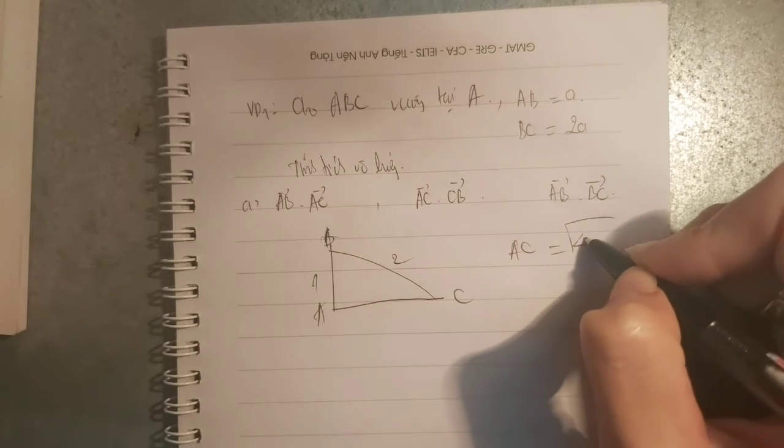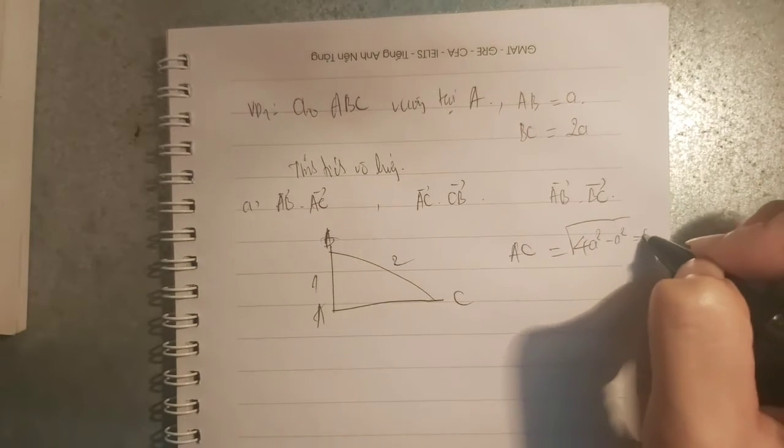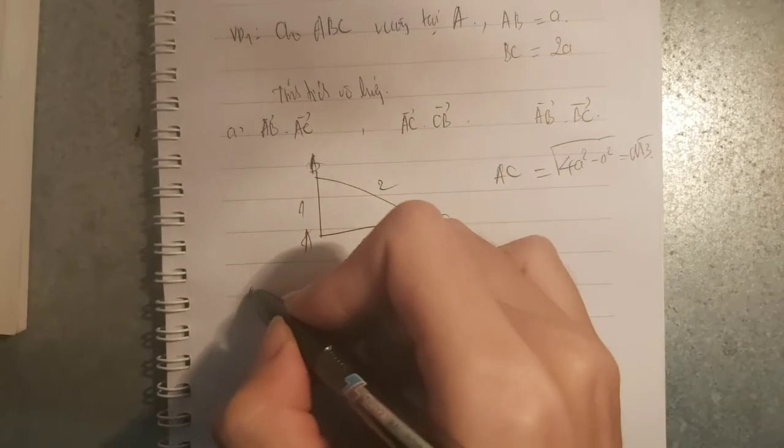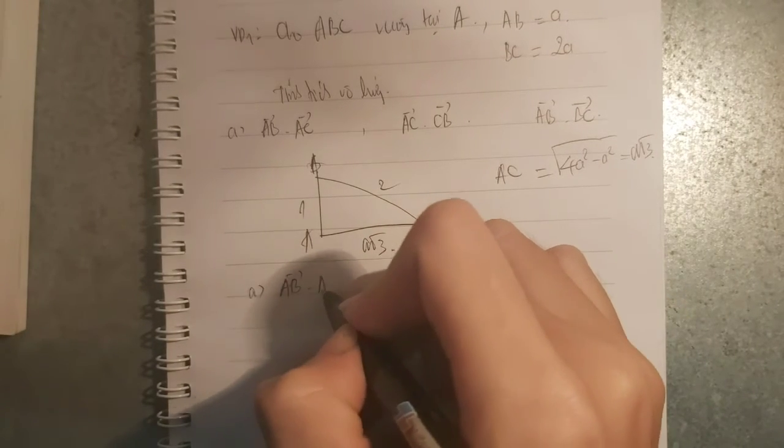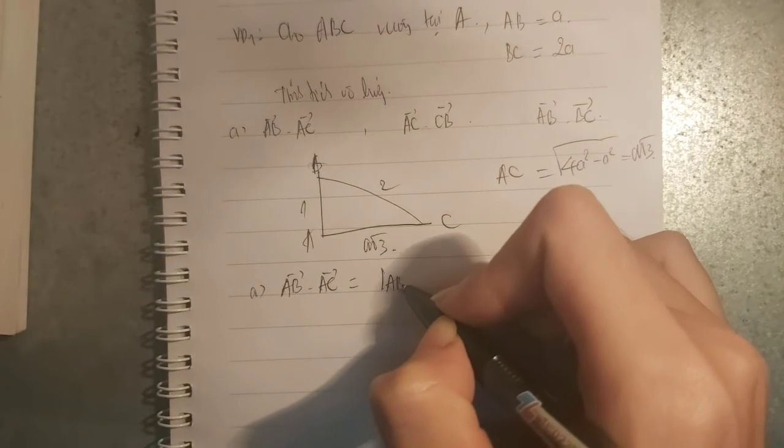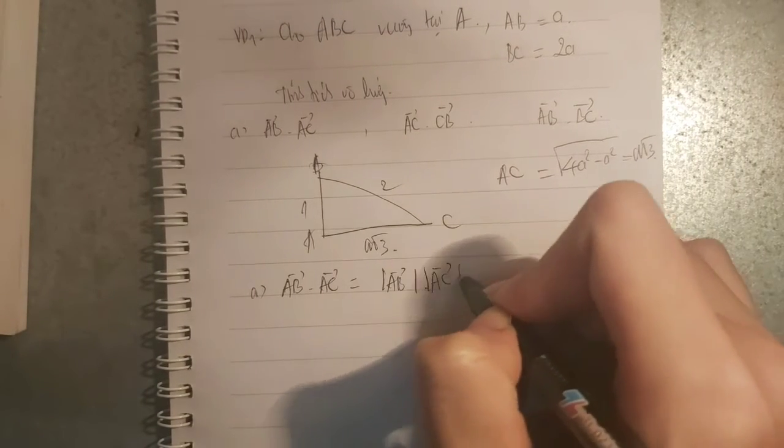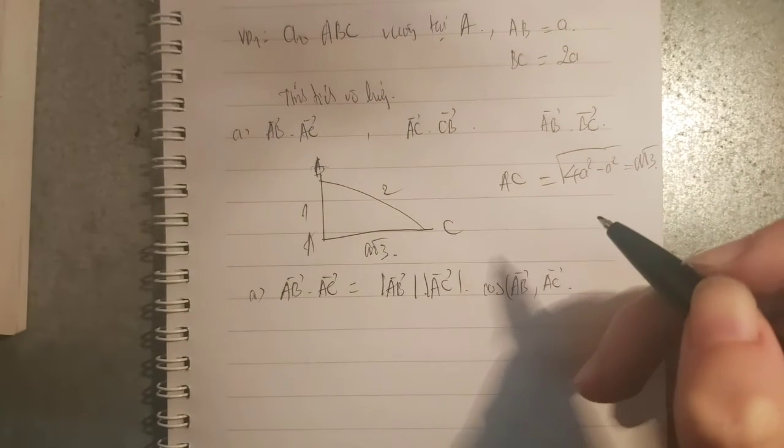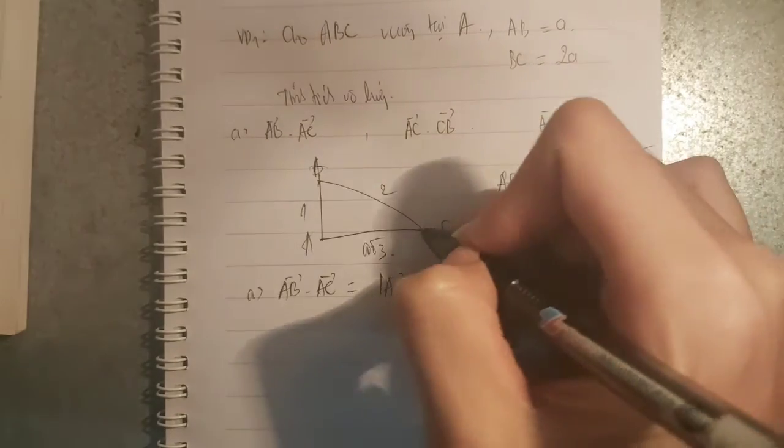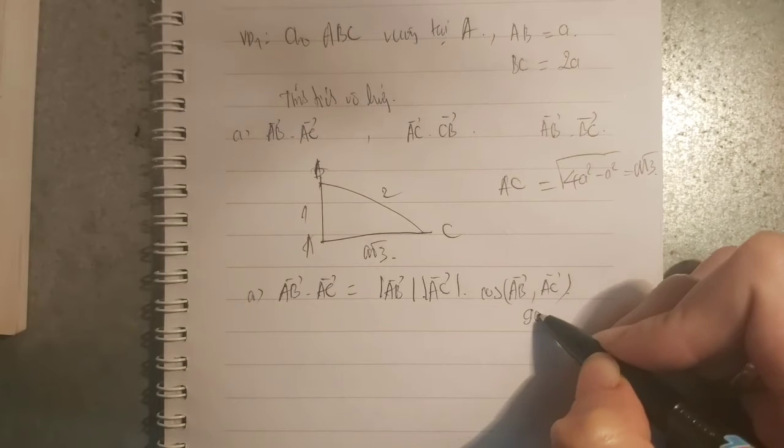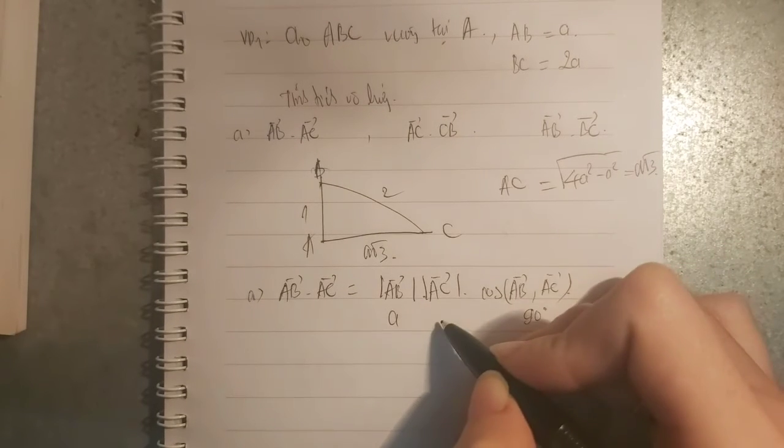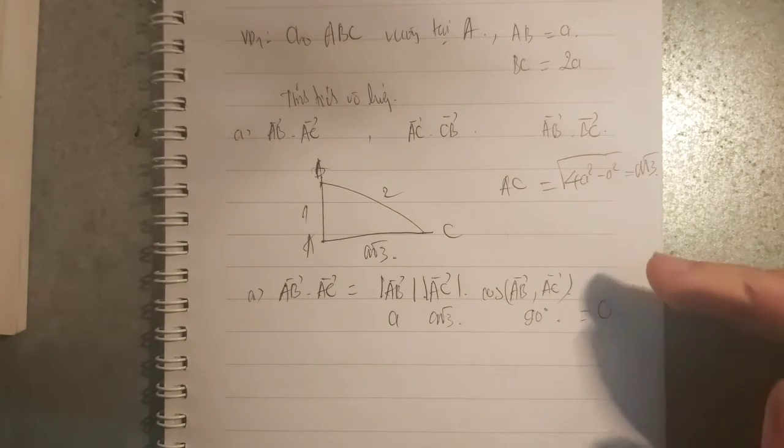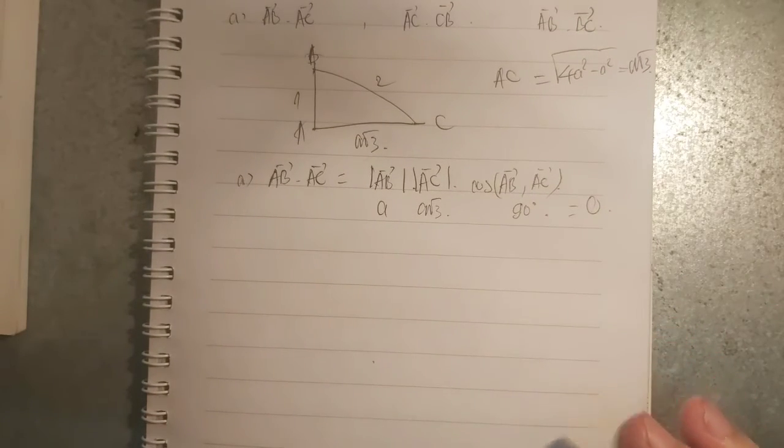Tính được AC rồi. Thì bây giờ AB x AC sẽ bằng độ dài AB nhân độ dài AC nhân với cos góc giữa AB và AC. Mà góc giữa AB và AC bằng 90 độ. AB bằng a, AC bằng a√3. Vậy nhân vào sẽ là bằng 0, tại vì cos 90 bằng 0.